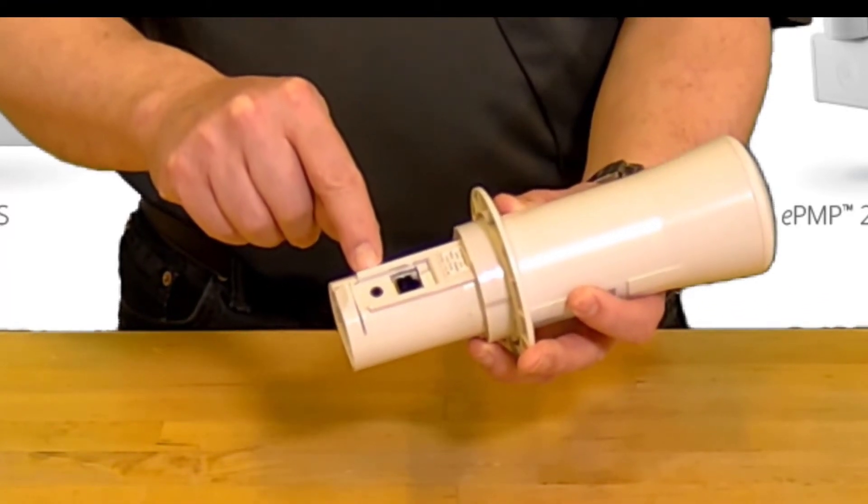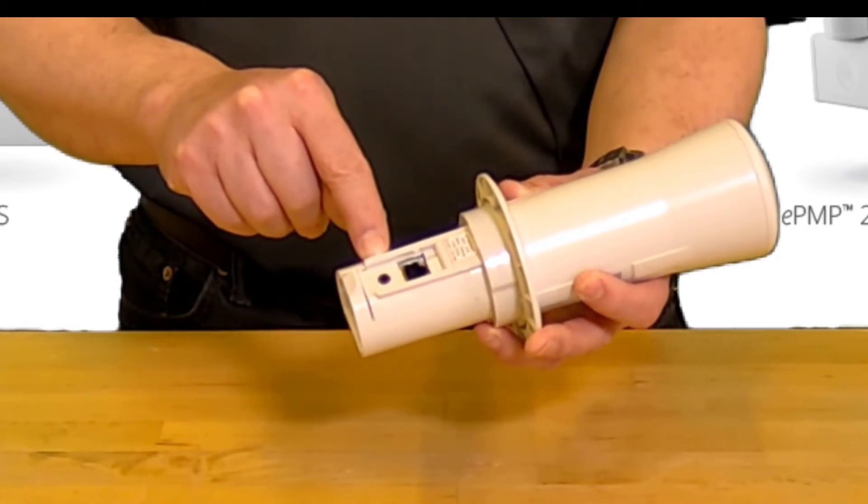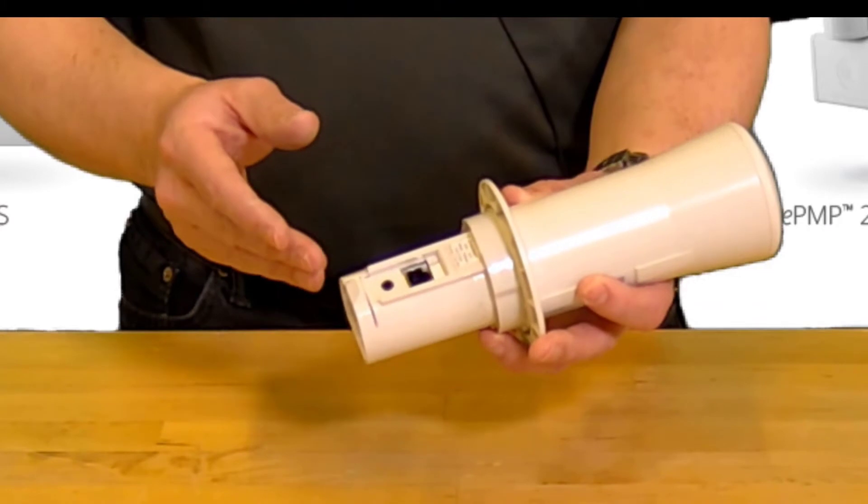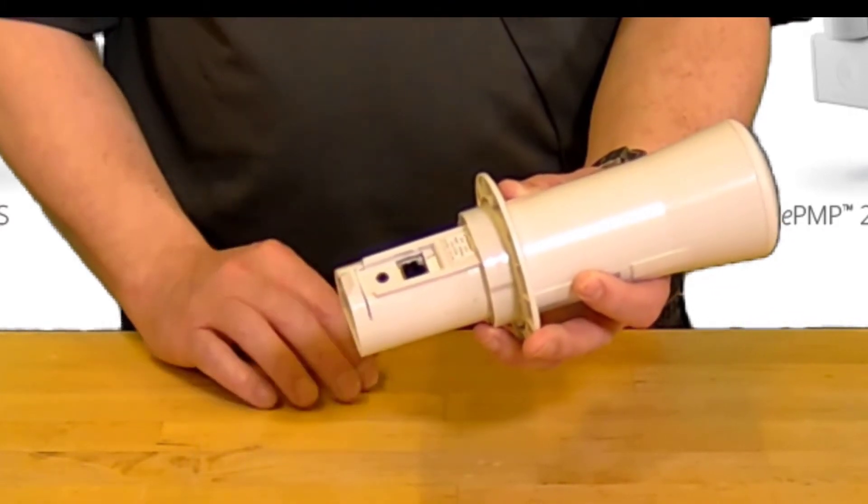The second port outputs the alignment tone, which can be used to precisely aim the dish during installation. Note that the alignment port accepts a standard 3.5 millimeter audio jack for direct connection of a pair of headphones.